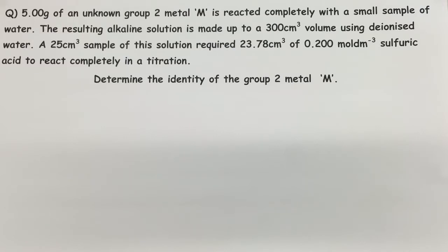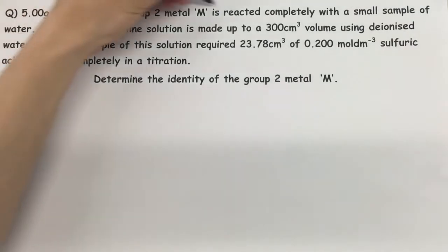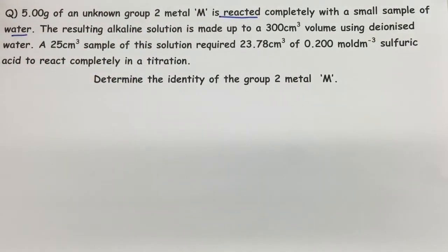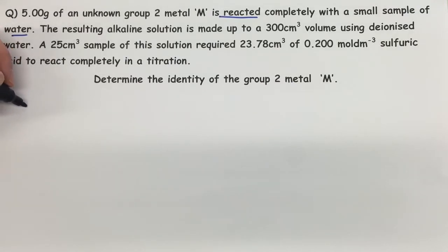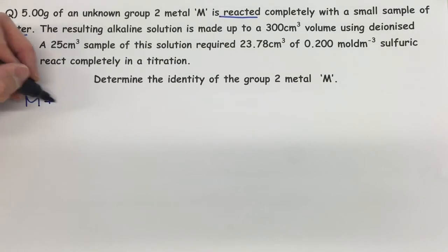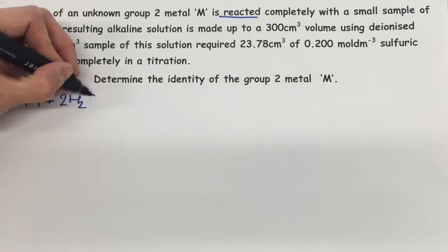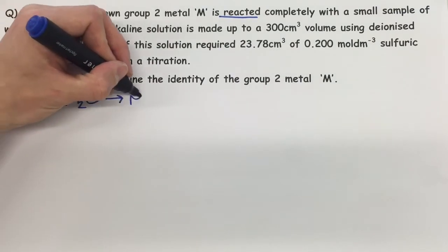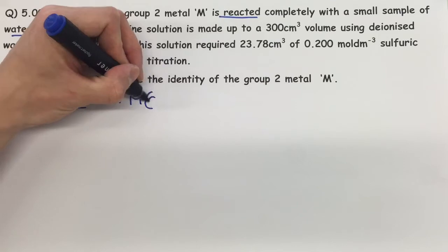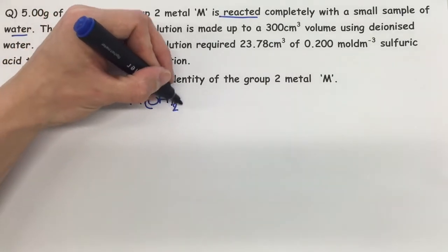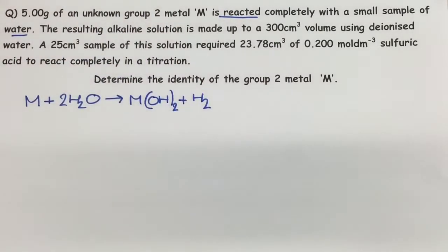The task is to find the identity of the group 2 metal M. We're told that the group 2 metal reacts completely with water — group 2 metals do react with water. For instance, we know there is an equation: M + 2H₂O → M(OH)₂ + hydrogen gas. We know that that's an equation that takes place.